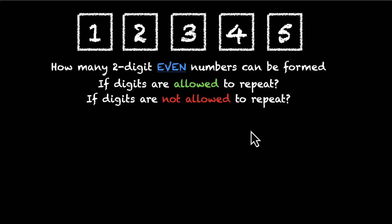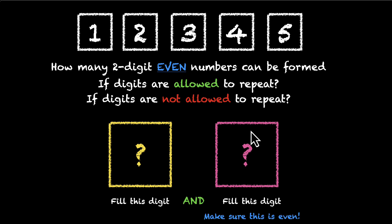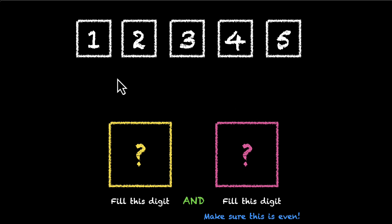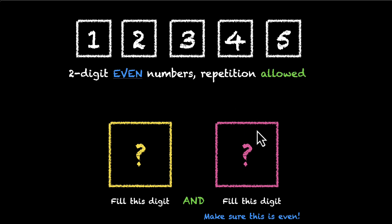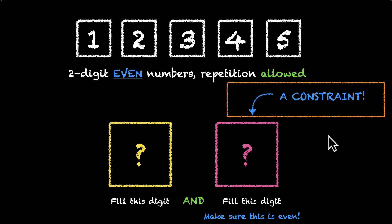I know this is sometimes helpful, so I'll present the boxes on the screen. You have to fill the tens digit and the units digit, and you have to make sure the number is even — so the last digit has to be even. Because this is a constraint, what we need to do is take care of this first. Always take care of the constraint first.